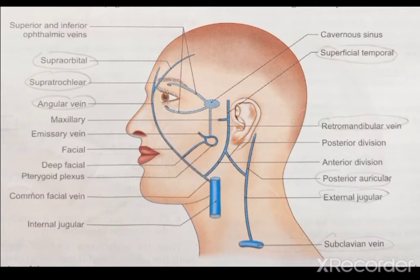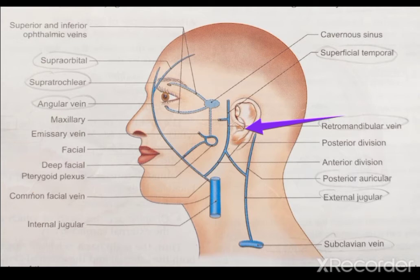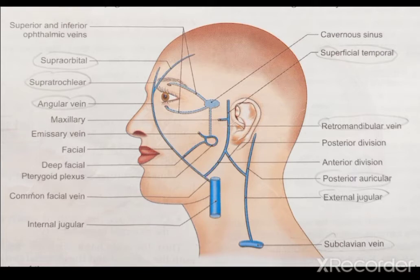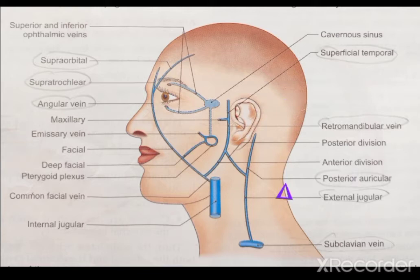The superficial temporal vein descends in front of the tragus, enters the parotid gland, and joins the maxillary vein to form the retromandibular vein. When the superficial temporal vein and the maxillary vein join, they form the retromandibular vein, which then divides into two divisions.